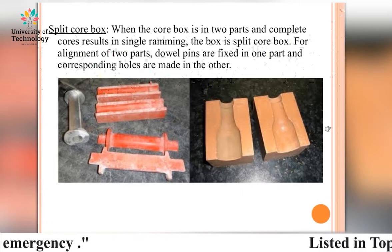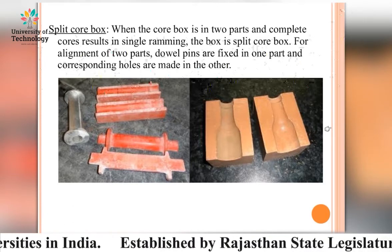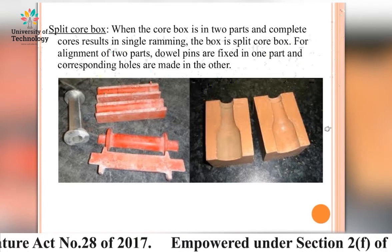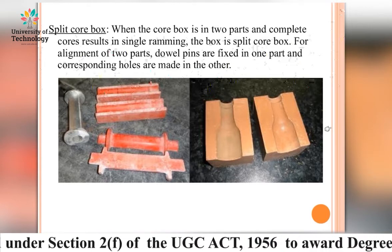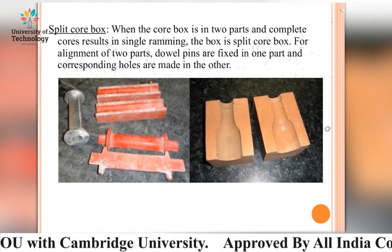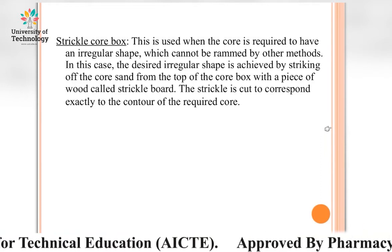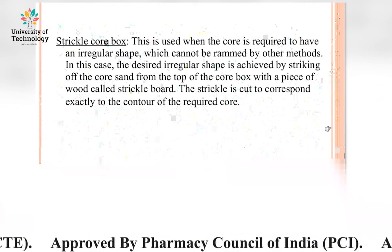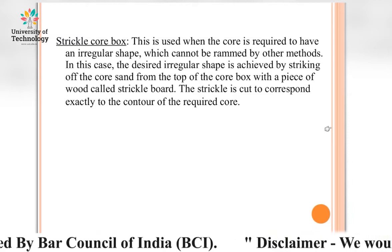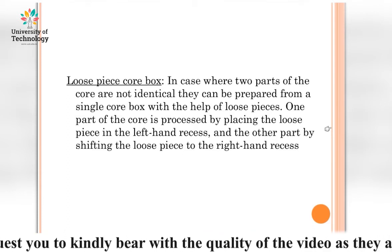Left and right core box: when the core is required in two parts that are not identical, two different core boxes of the half core type are provided for each part — these are called right-handed and left-handed core boxes. The striking core box is used when the core is required to have a regular shape that cannot be rammed by other methods. The desired shape is achieved by striking off the core sand from the top of the core box with a piece of wood, and the striking piece is cut exactly to the contour of the required core.